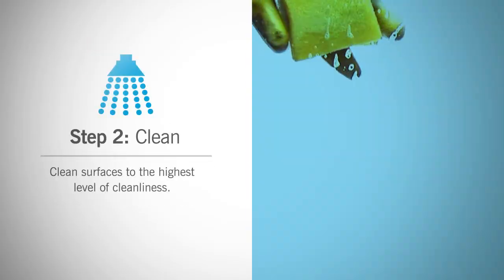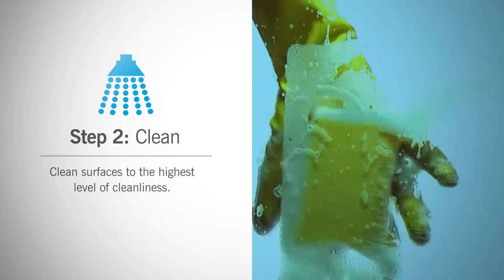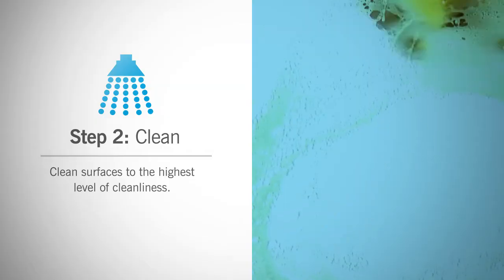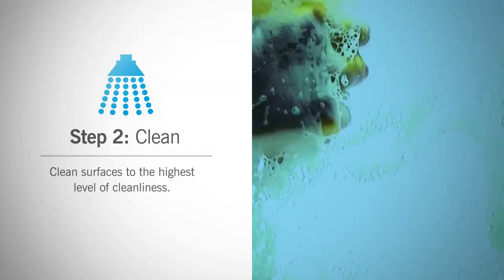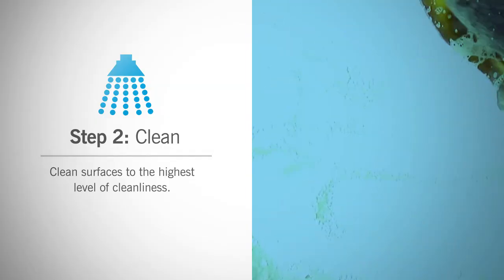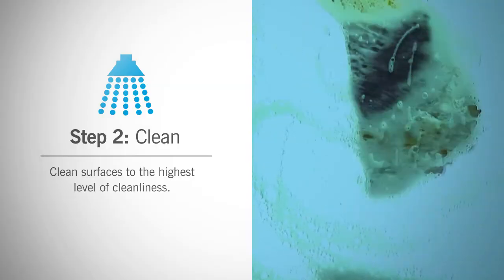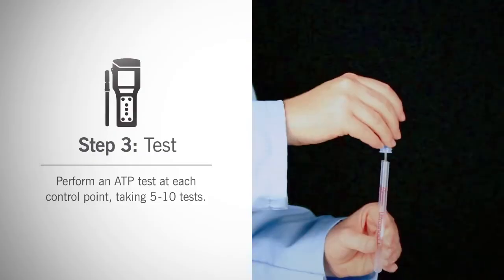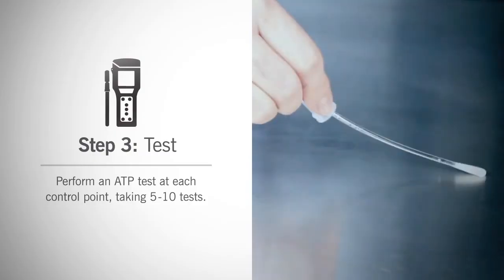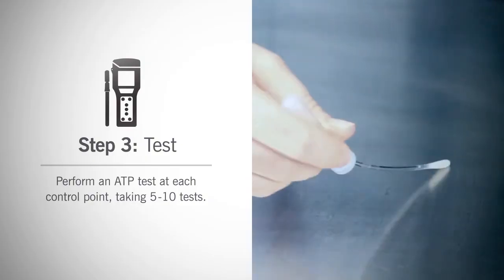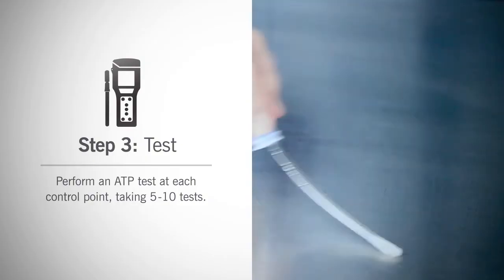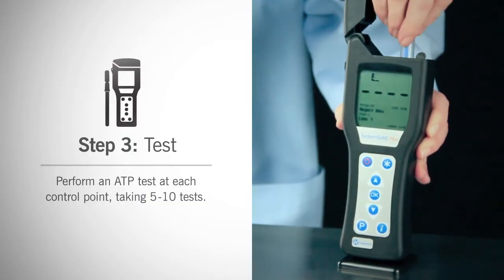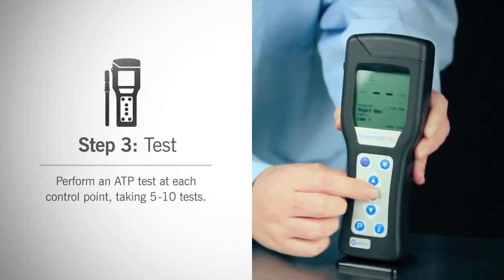Step two: clean surfaces to the highest standard of cleanliness. This may include a total production line breakdown. Refer to your GMP, SSOP, or HACCP program for more information. Be sure that future cleanings will be held to this level of clean as a standard. Step three: perform an ATP test at each control point, taking five to ten replicate tests. You can either perform tests over several days, or for control points with large surface area, perform multiple tests from different spots at that location.